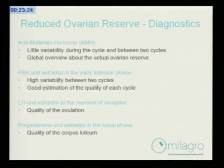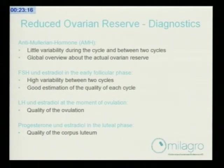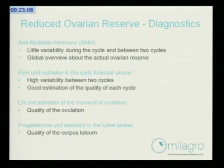What about the biochemical markers? Anti-Müllerian hormone is produced by the antral follicles, and we see only little variability during the cycle and between two cycles. So we can take it whenever we want. It gives a good global overview about the actual ovarian reserve, because it is really stable.